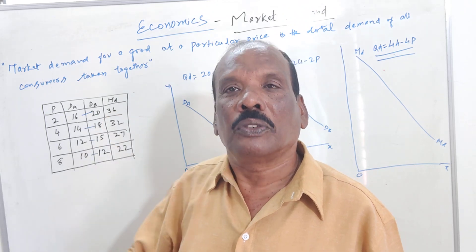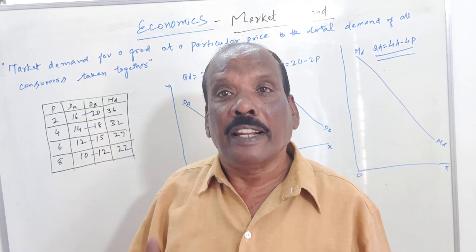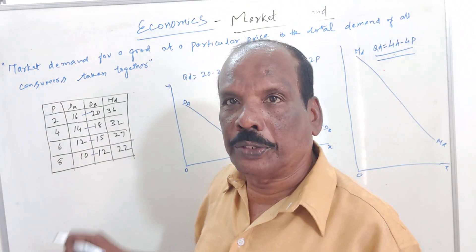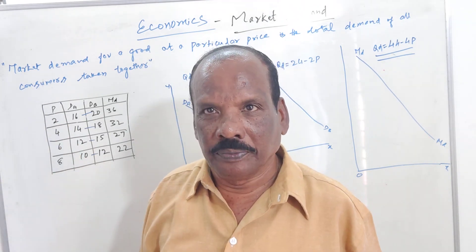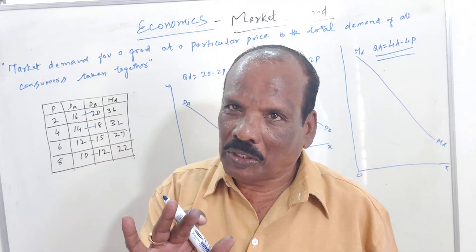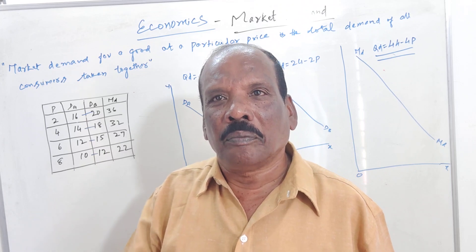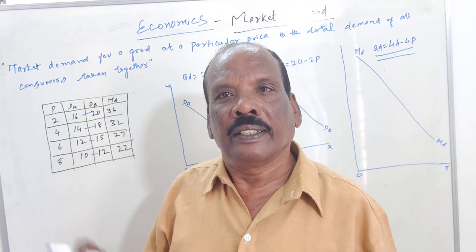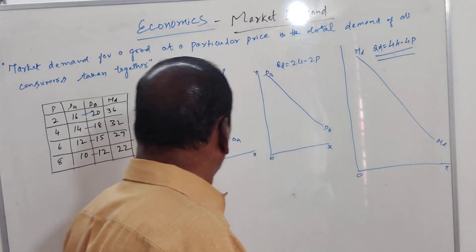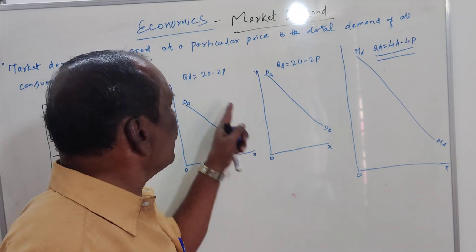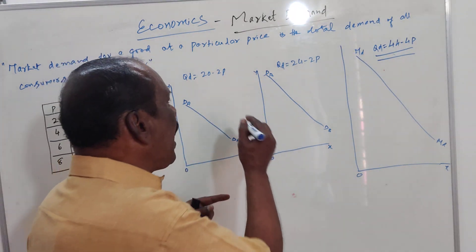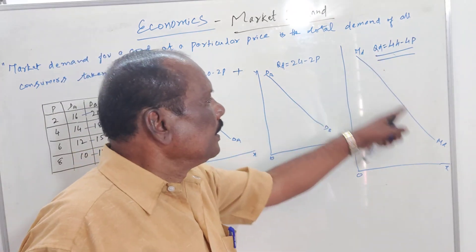The market demand equation can be derived by adding the individual demands. This is the demand schedule of two individual consumers, and when we add these two individual consumers' demand, we get the market demand. On the basis of this, we have drawn three diagrams here. This is the demand curve of consumer A, this is the demand curve of consumer B, and when you add them, you will get the market demand curve. The size of the diagram goes on increasing — it becomes bigger and bigger.